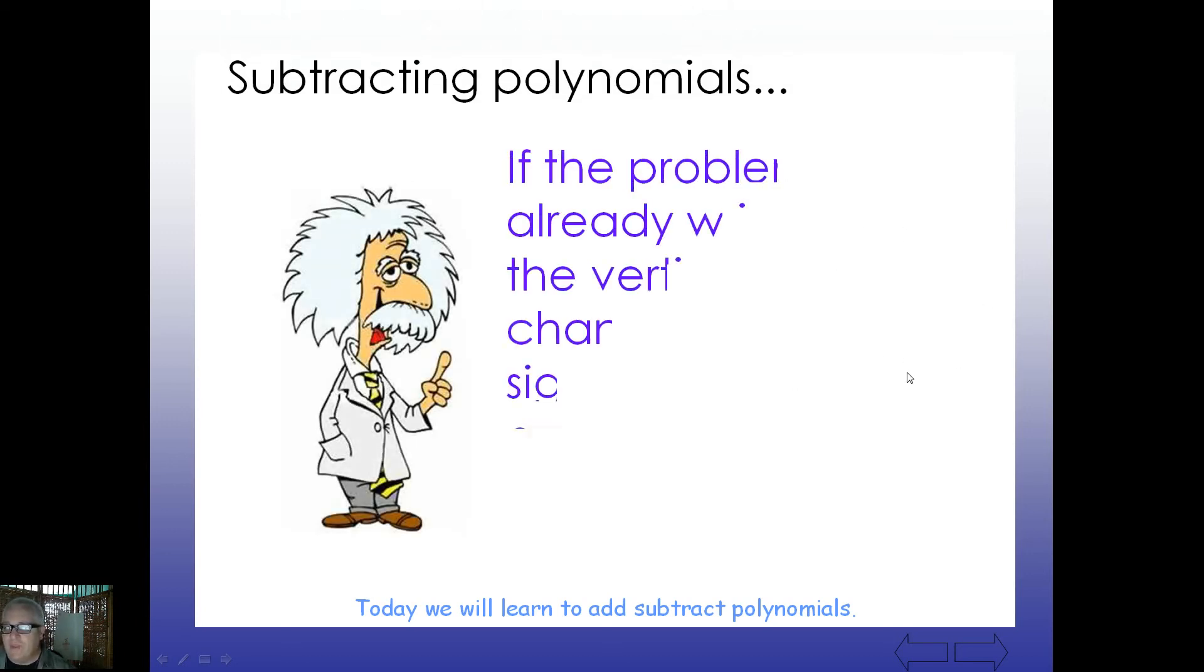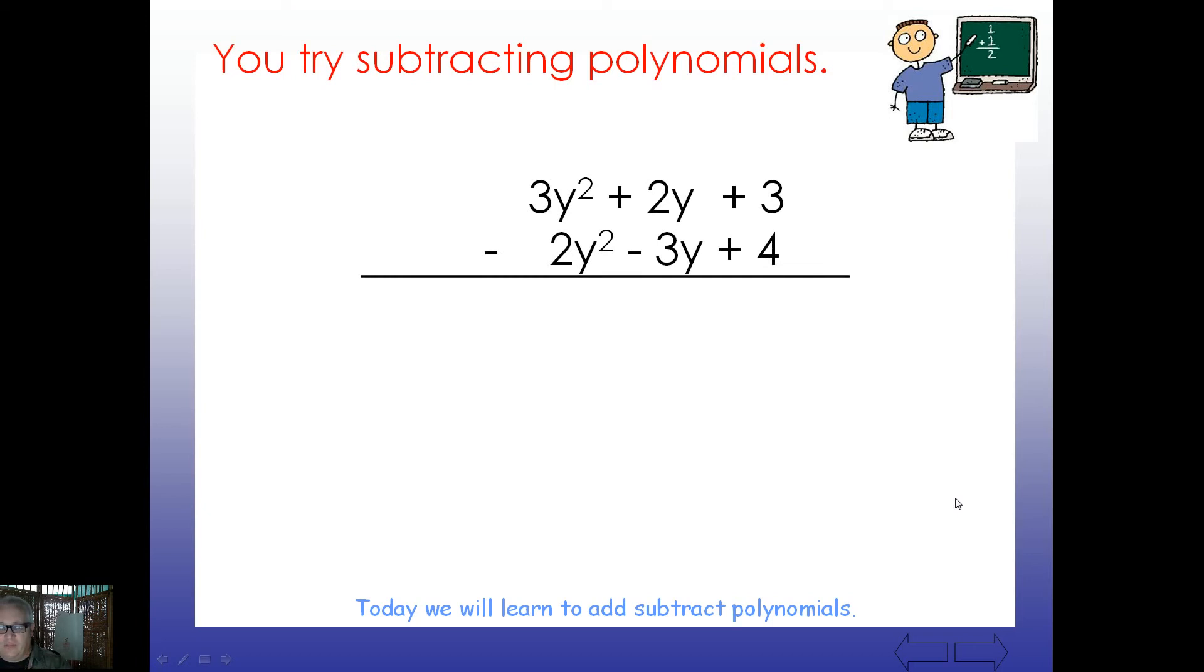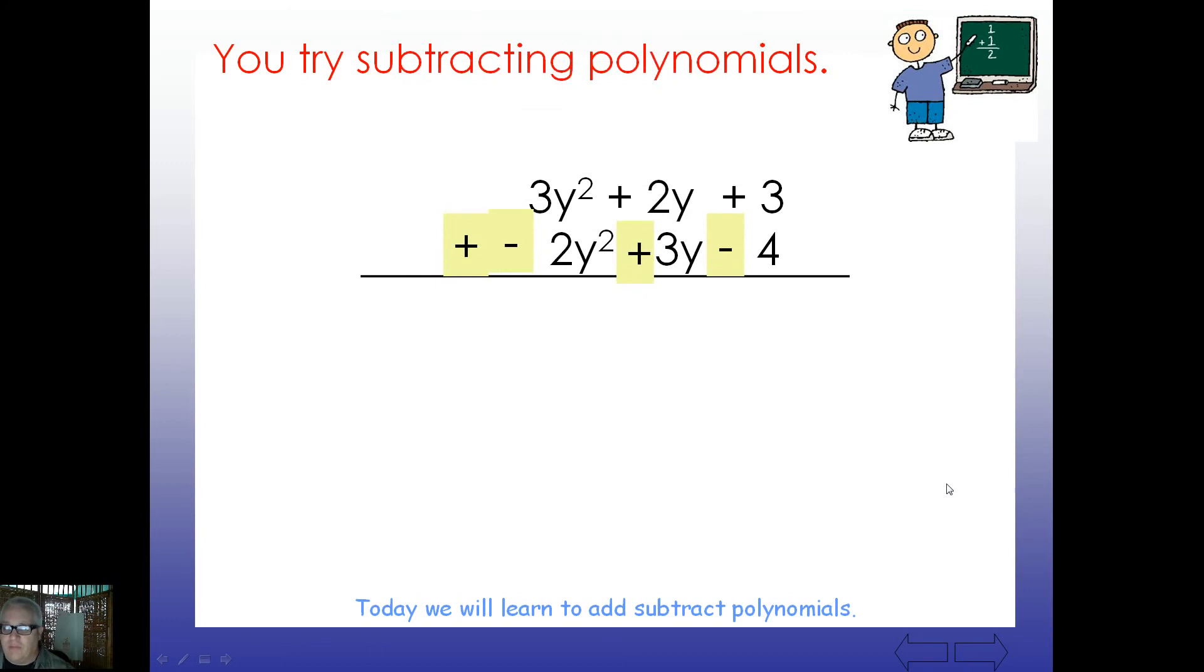Alright, let's look at another here. Let's get a little hint. It says if the problem is already written in the vertical format, change all the signs in the bottom group and add. So if you've already got them stacked like this problem here, notice the subtraction sign. You can change this subtraction to addition, but make sure you change all these signs down here. So there's your subtraction sign. Go ahead and change that to addition, but what's the opposite of positive 2y²? It should be -2y². What's the opposite of subtracting 3y? It should be adding. The opposite of positive 4 is -4. And now we can add straight down: 3 and -2 and so on. And be sure to change all the signs in the bottom polynomial. So y² plus 5y minus 1.